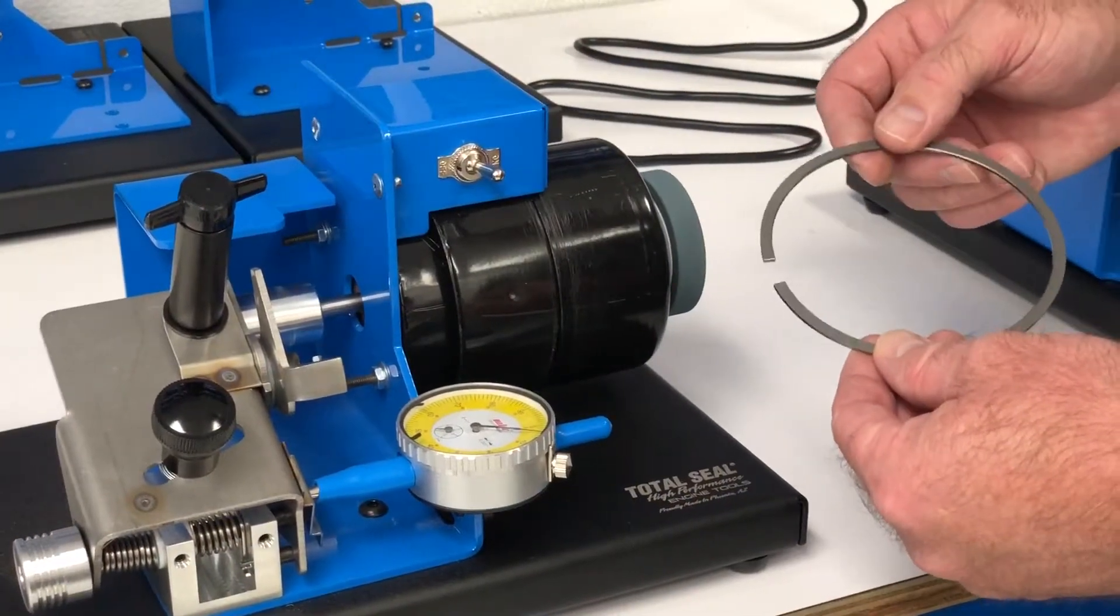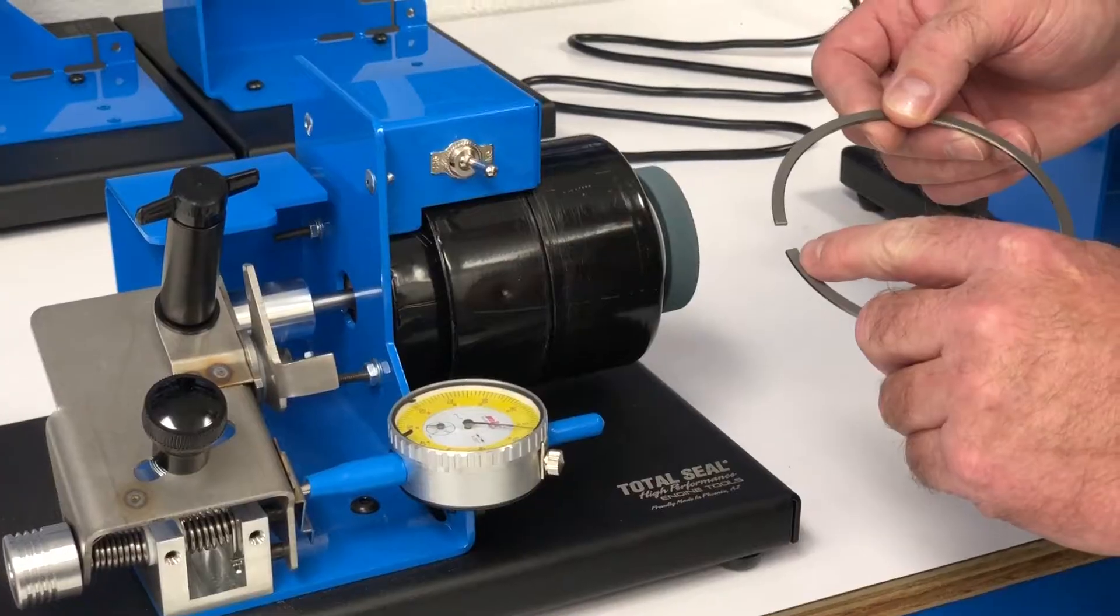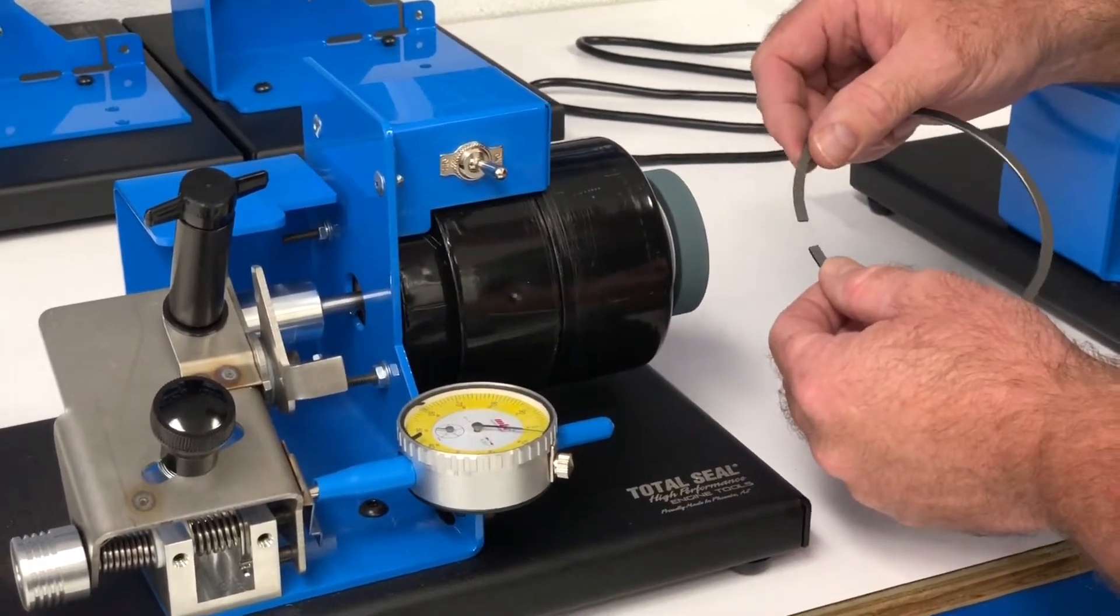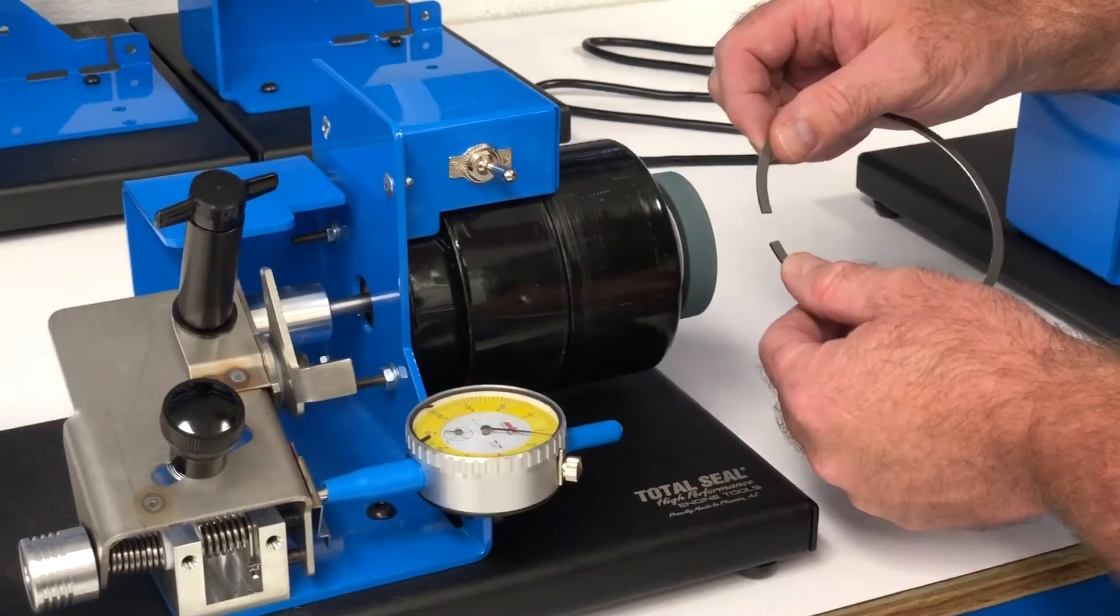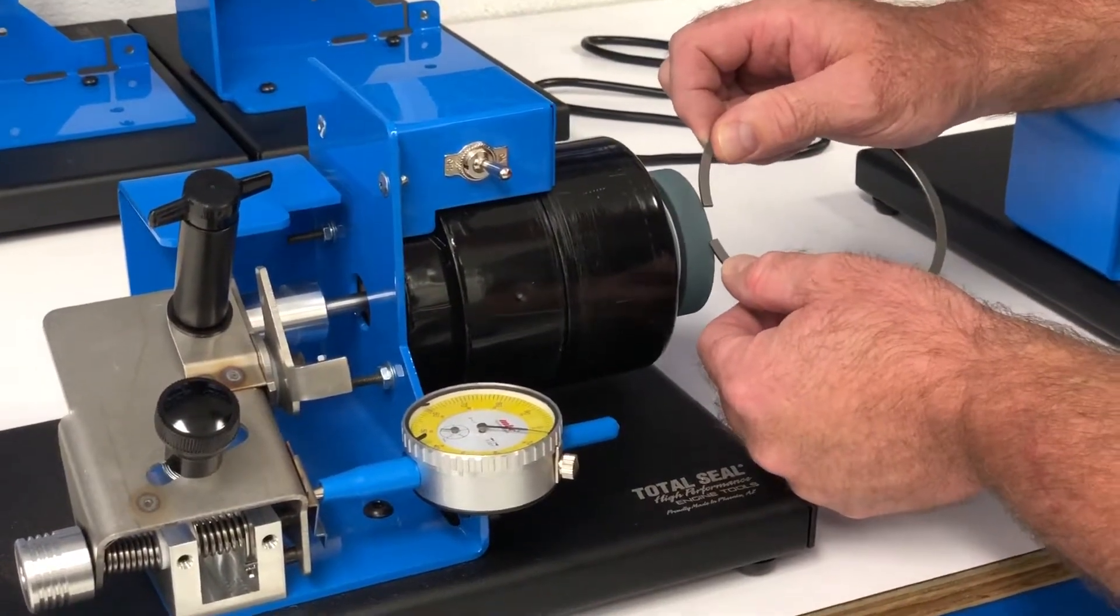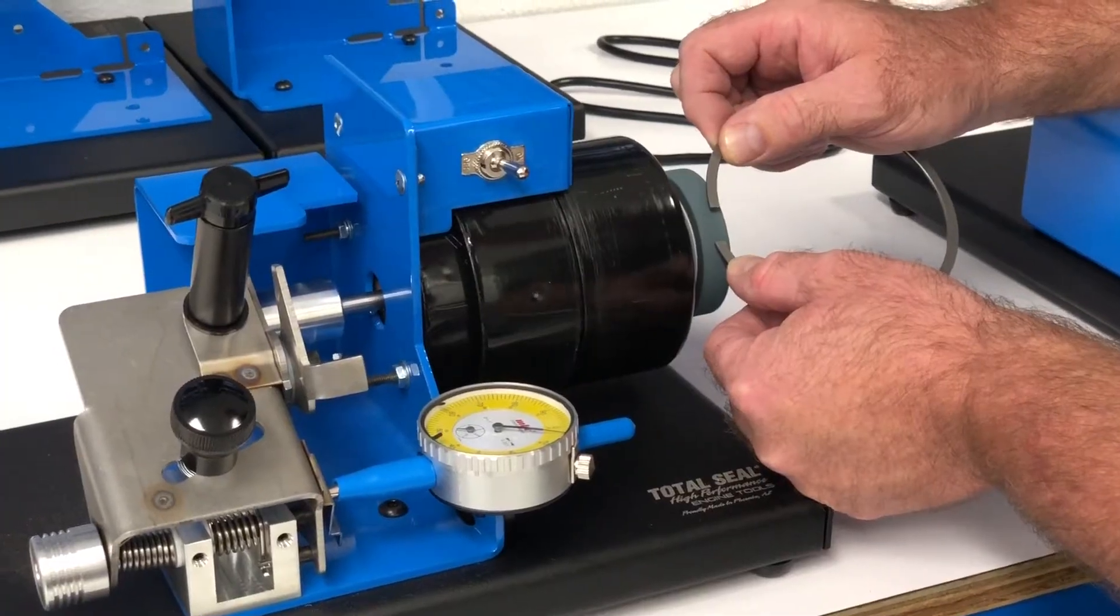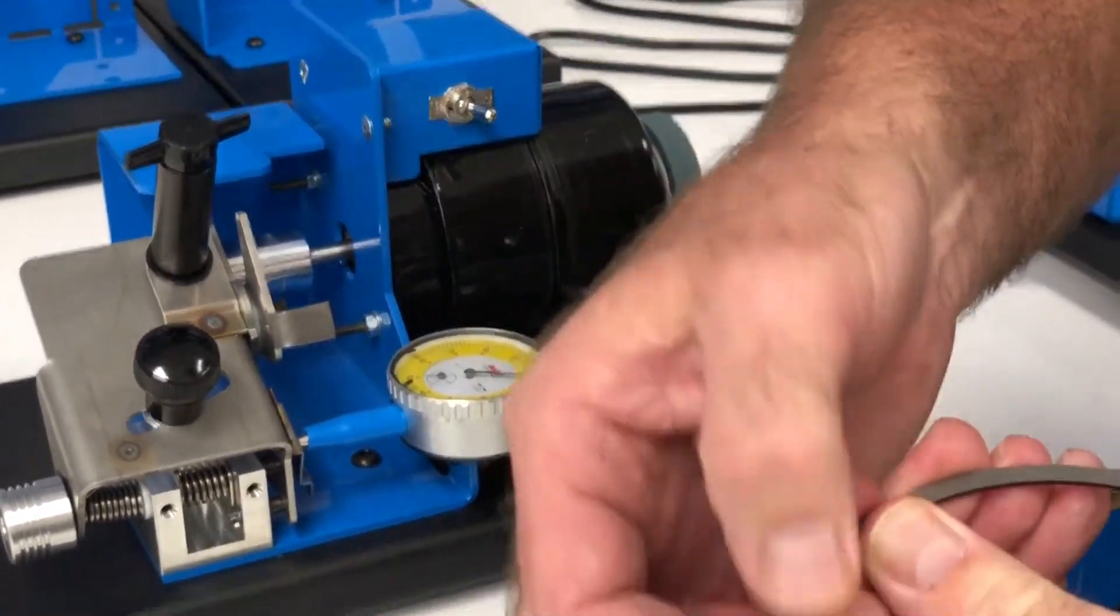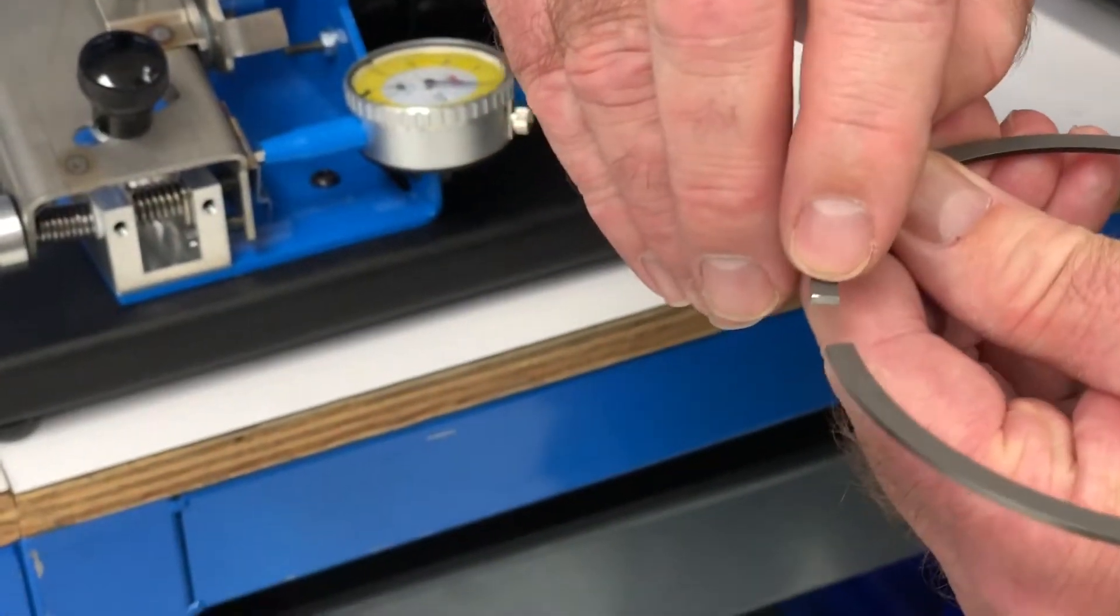Okay, now I'm going to show you how to deburr the end gap of the ring after we filed it. So basically what we have here is a very light abrasive wheel just for taking the burrs off the edge of the ring. You're going to come up and barely touch that surface. So basically all you're doing is just knocking that edge off.